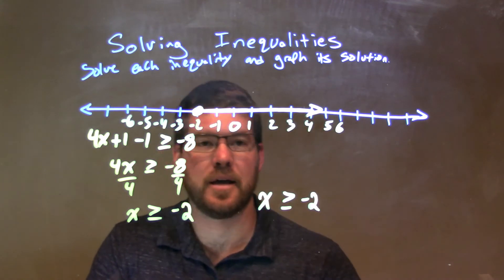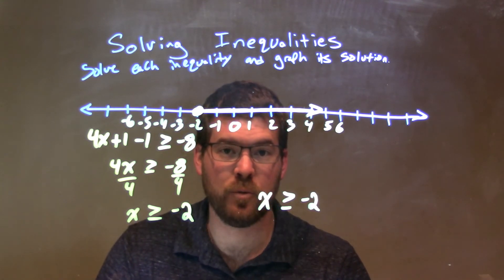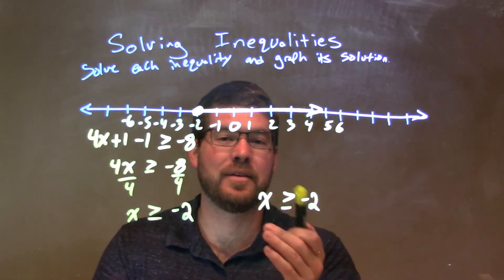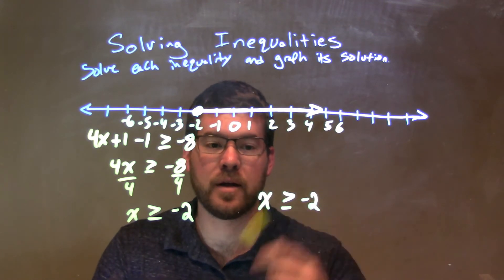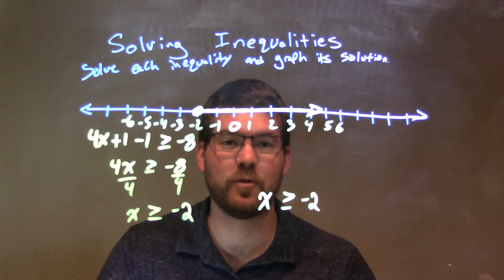Graphing that, I put a closed circle at negative 2 because it can equal negative 2. And then I put my arrow to the right because x is greater than that. So again, our final answer is x is greater than or equal to negative 2.